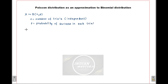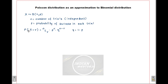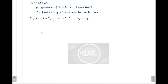If this is the case, and I ask you to find the probability of X taking a value equal to r — where X is the number of successes in n trials — then probability of X equals r is given by nCr times p raised to r times q raised to n minus r, where q is 1 minus p, the probability of not getting success in a trial.